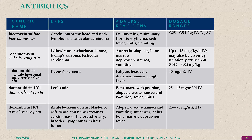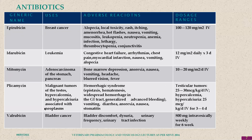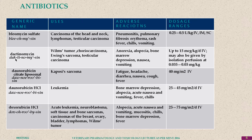Daunorubicin is a specific drug for blood cancer or leukemia; it also causes bone marrow depression, alopecia, and stomatitis. Doxorubicin is used in breast cancer and lymphomas. The antineoplastic antibiotics to remember include doxorubicin, bleomycin, and others.